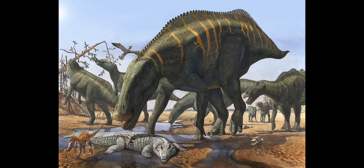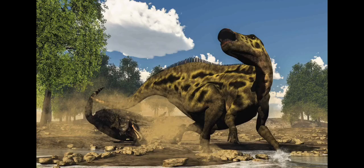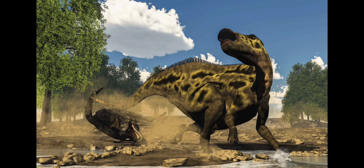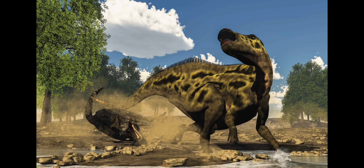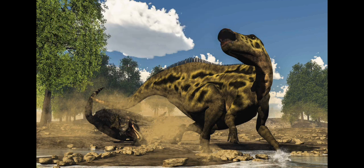There is only one single species that has been discovered for Shantungosaurus as of right now, that being Shantungosaurus giganteus. The name Shantungosaurus means 'Shandong lizard', due to it being found in the Shandong Peninsula of China.